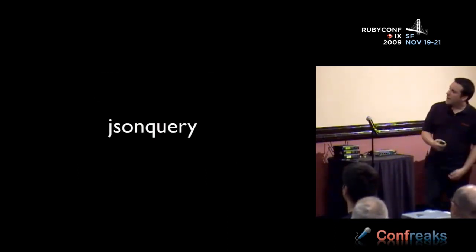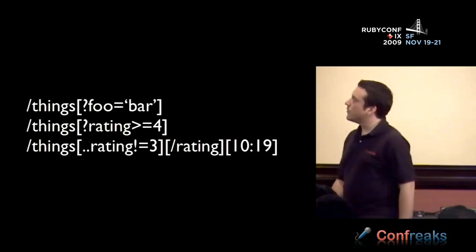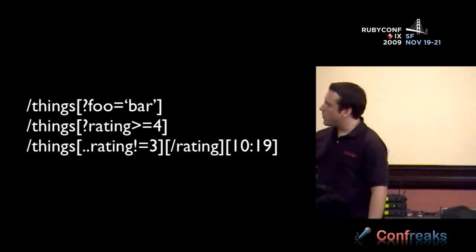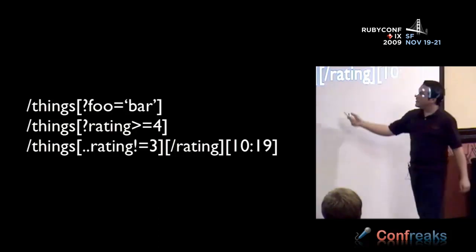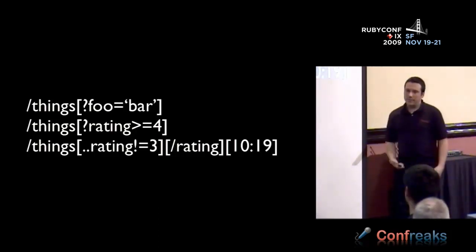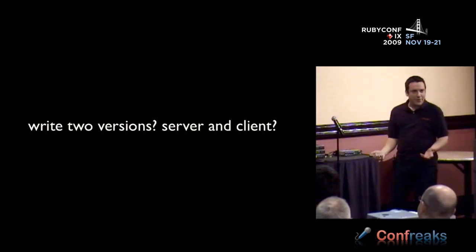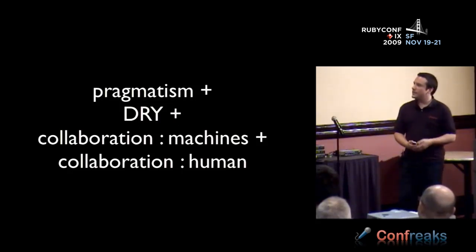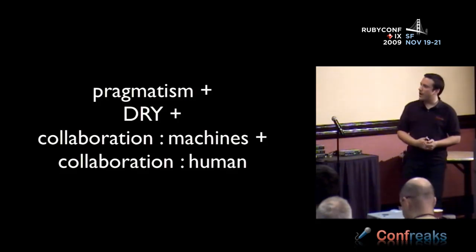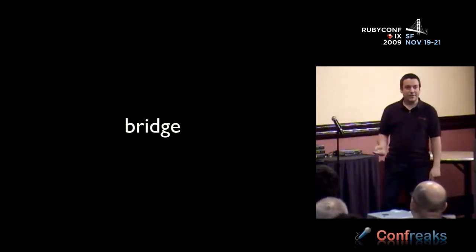JSON Query, from Chris Zip in Dojo land, is a sort of standard that lets you ask questions in a cross-service manner. You can say: give me all things where foo equals bar, or rating greater than some value, or use the double period for recursive descent — any nested object where rating is not equal to 3, sort ascending by rating, give me items 10 through 19. You can do this in the browser or on the server. But then the question is: do you write two versions, one in the browser and one on the server? That's also not very DRY. That's what finally prompted using a bridge — this isn't an impractical wild experiment, it was actually needed.